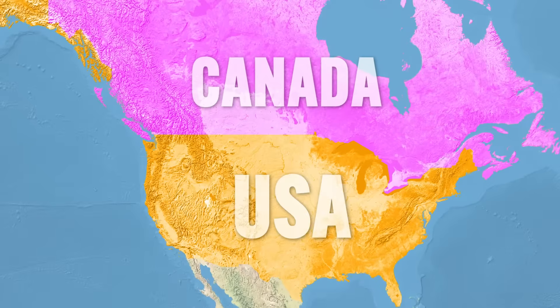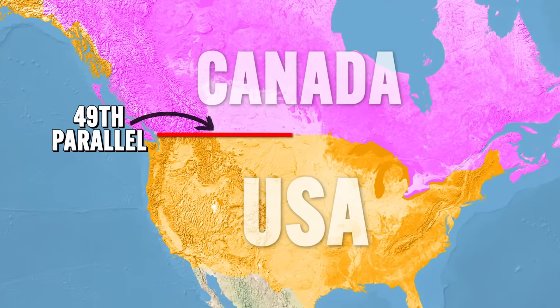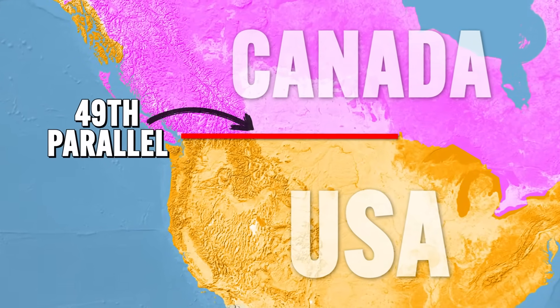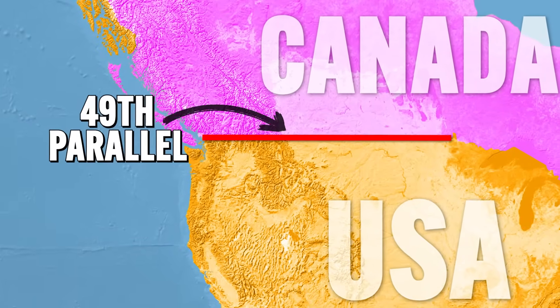Antecedent boundaries are drawn before a territory was populated. For example, the 49th parallel marks the boundary between the United States and Canada, which was the result of a treaty signed in 1846. But at that point, there were very few Americans living in this territory. Regardless, this boundary was drawn first and then over the course of a century the territory was populated.